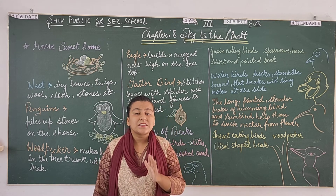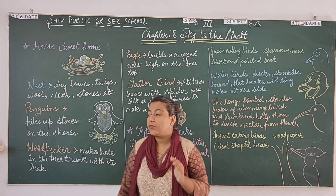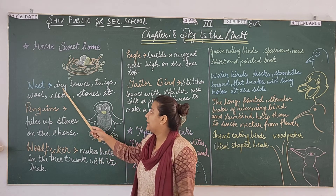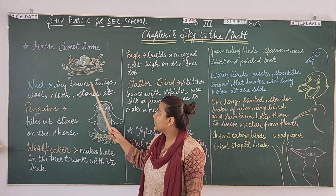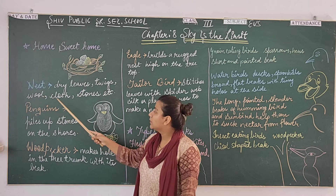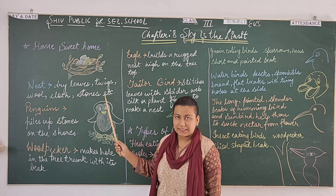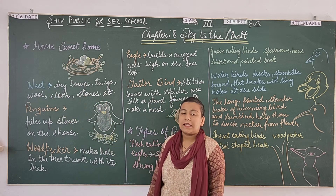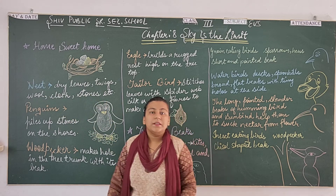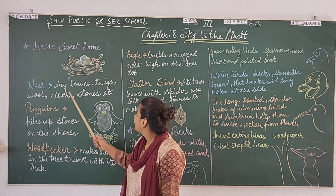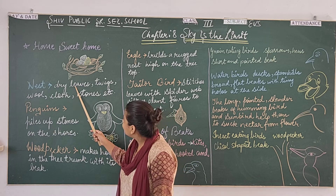Now the question is, how is a nest built? Nest is built using dry leaves, twigs, wool, and clothes. Bird nest is built to protect using dry leaves.